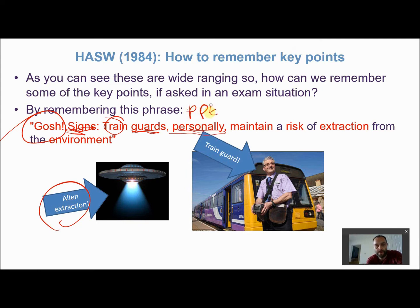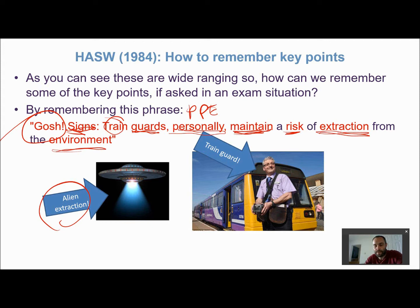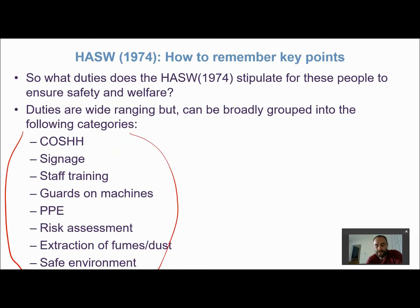'Personally' abbreviates PPE — personal protective equipment — making sure people have gloves, hard hats, whatever they need to stay safe. 'Maintain' relates to the maintenance of machines and equipment to ensure they're in good working order. 'Risk' relates to risk assessment — having one in place to mitigate risk and ensure workers know what to do. 'Extraction' relates to fume and dust extraction, and 'environment' covers the general safety of the workplace — no trip hazards, no poor lighting.